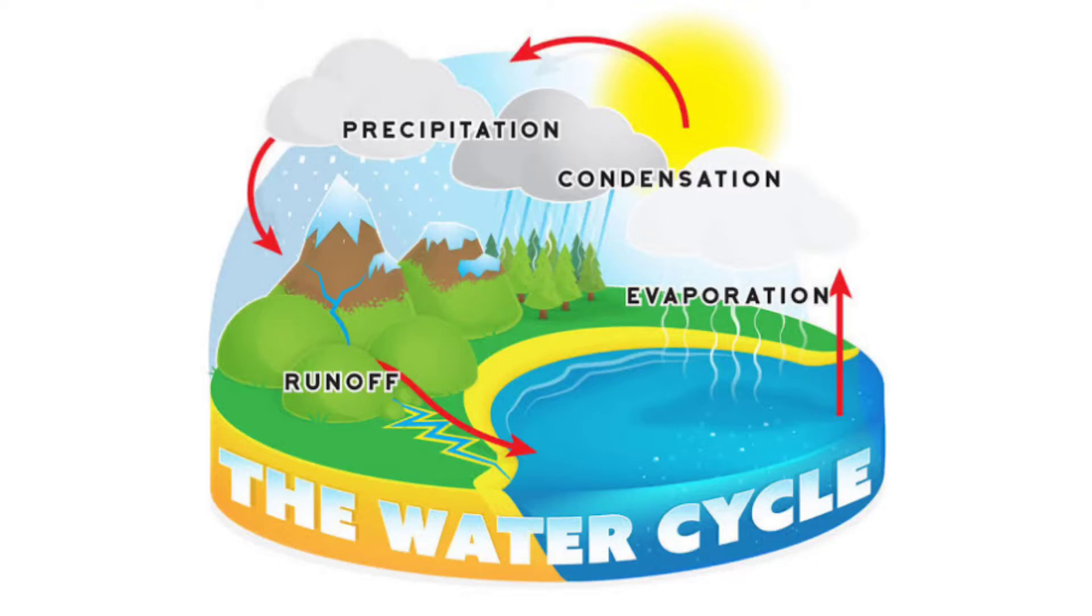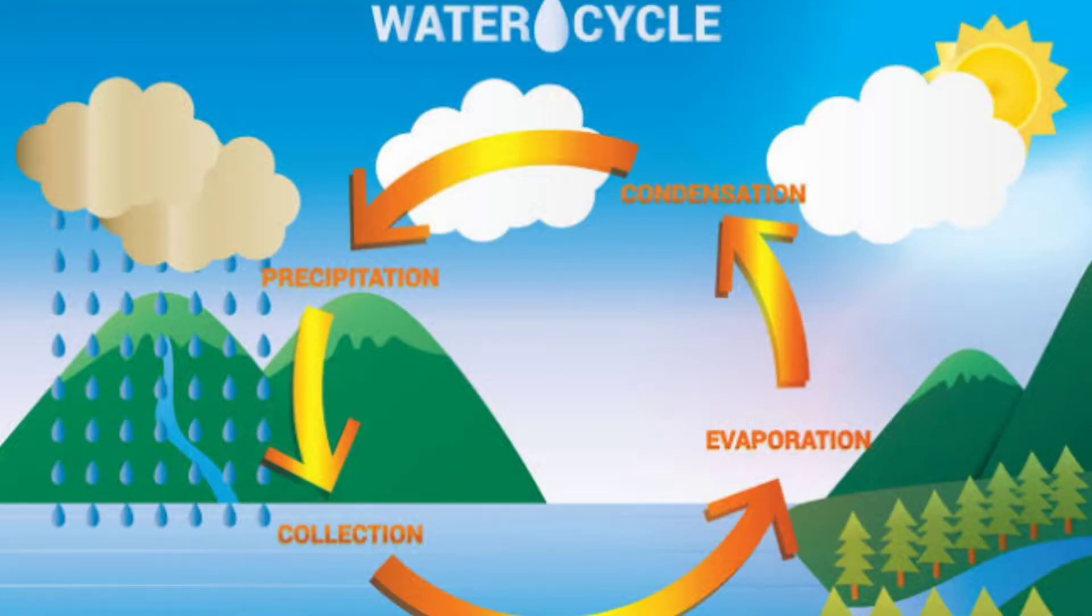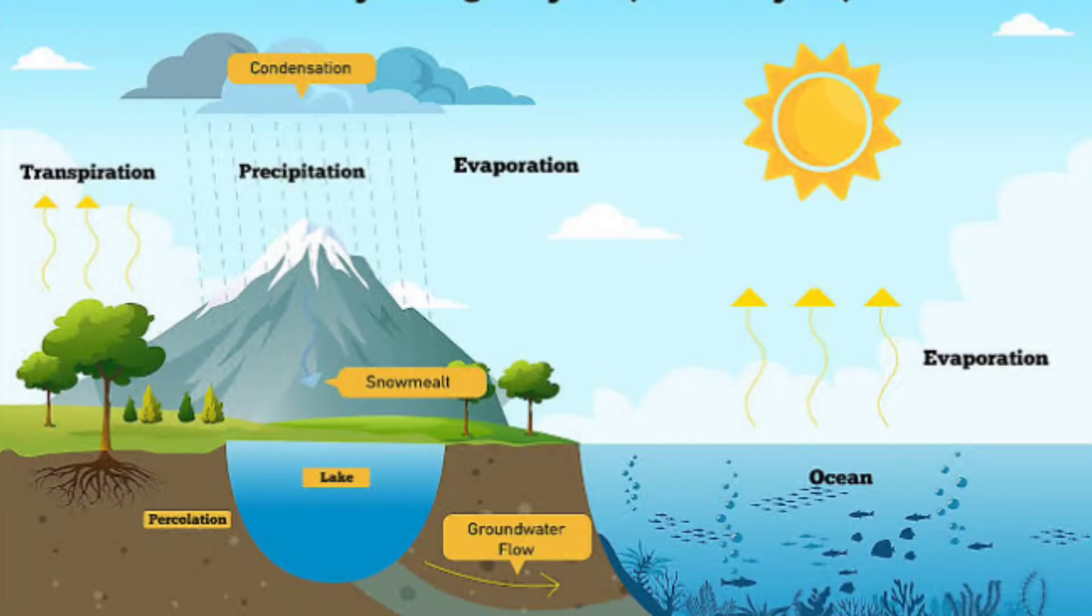What is water cycle? Water keeps changing its form in nature. It keeps moving from the earth to the sky and back. This movement of water in nature is called the water cycle.